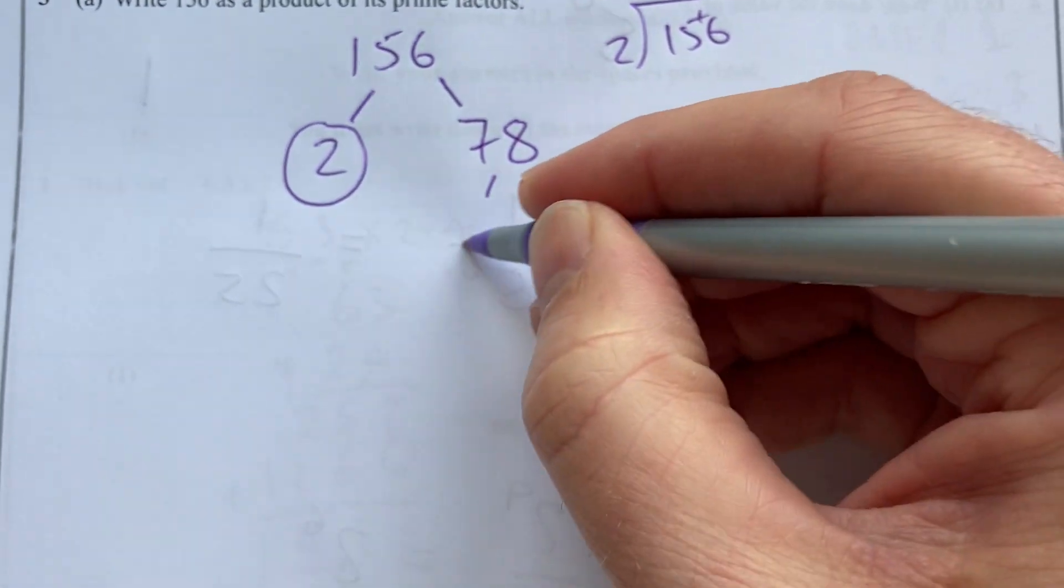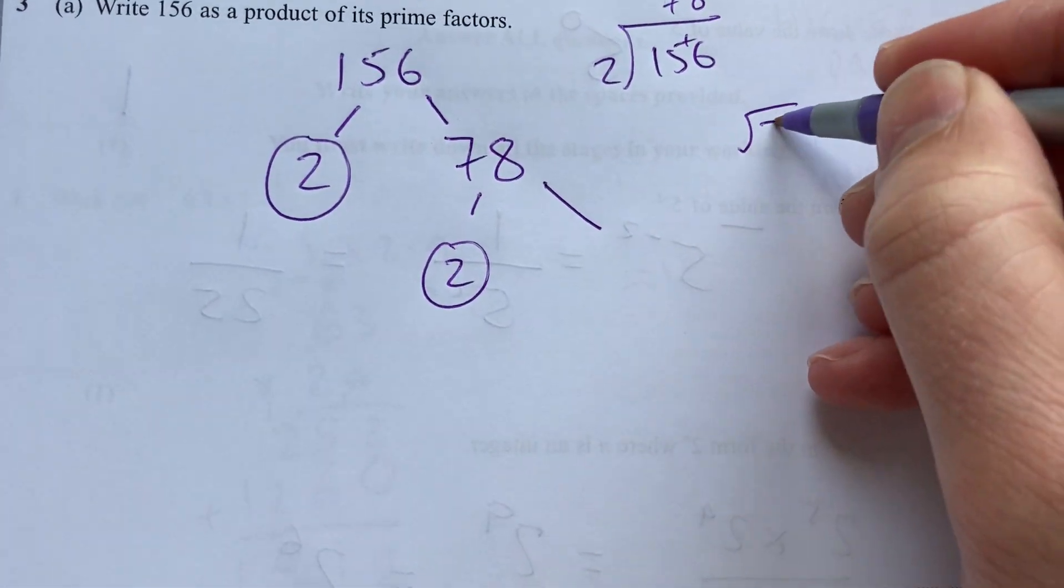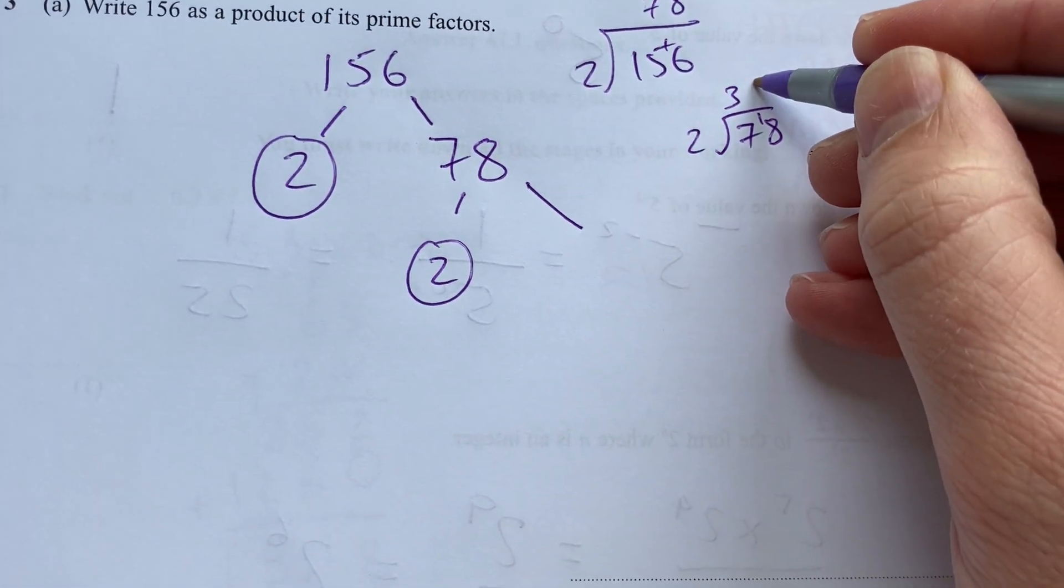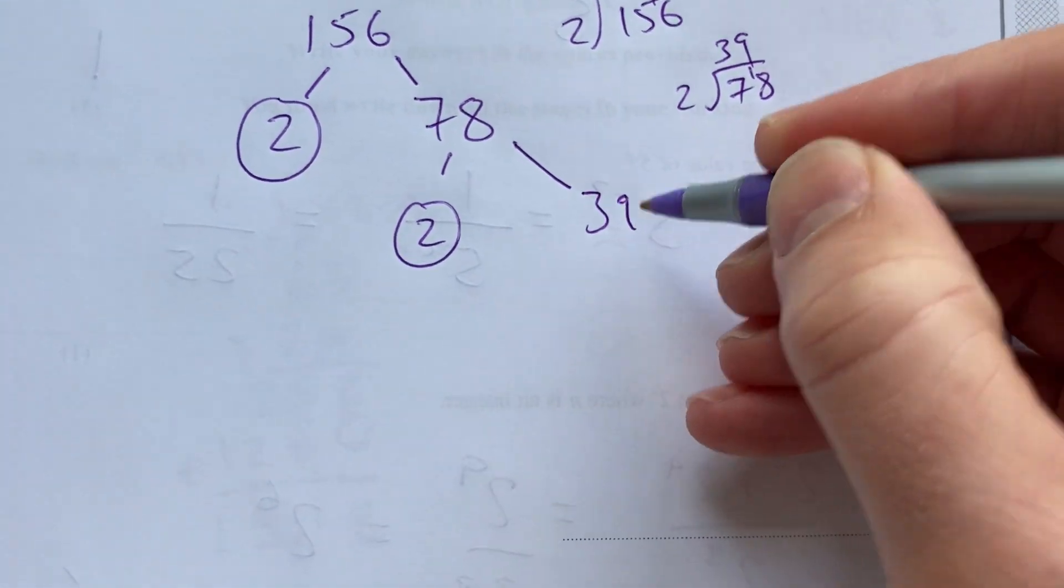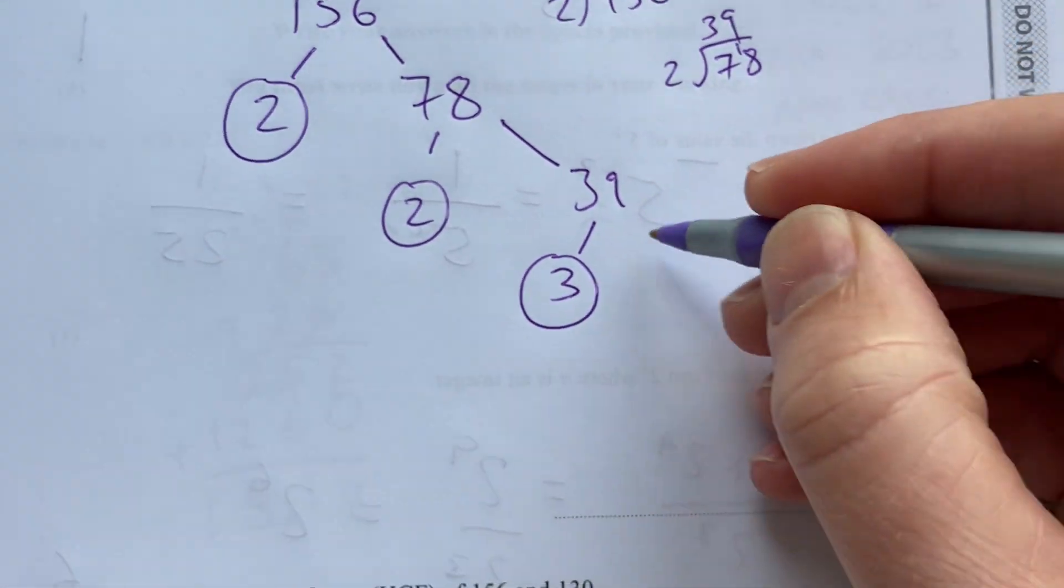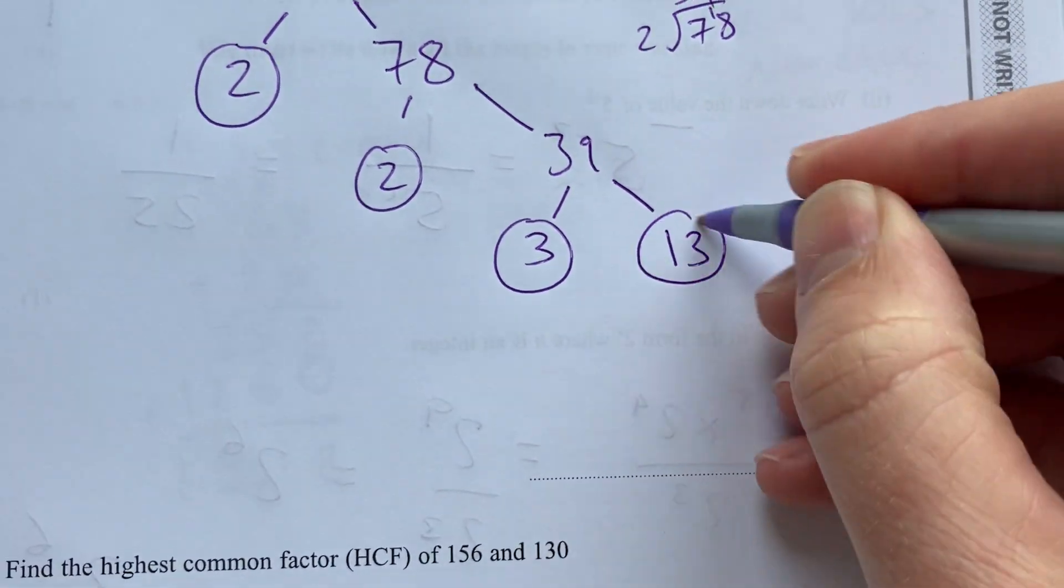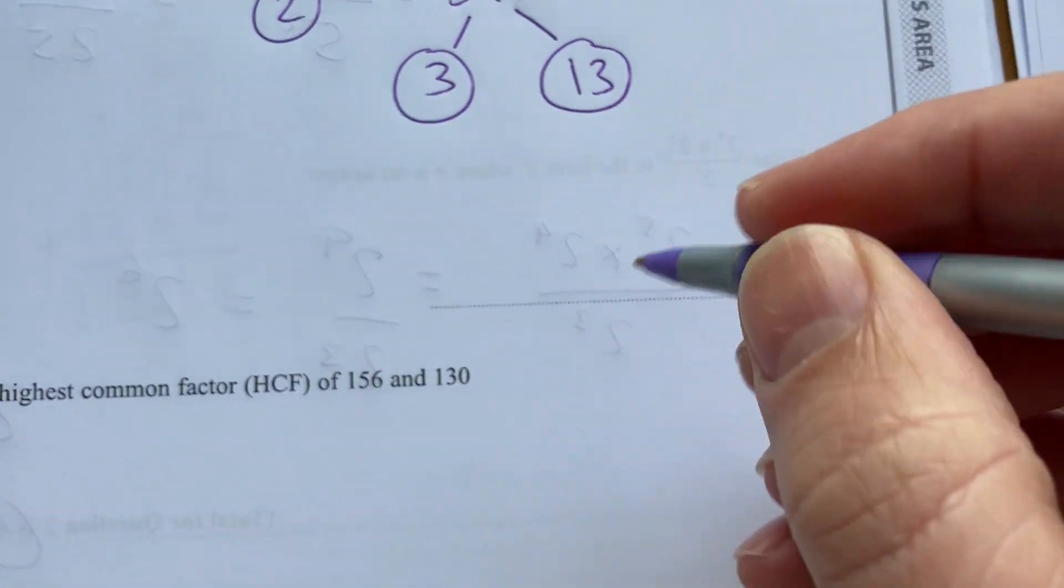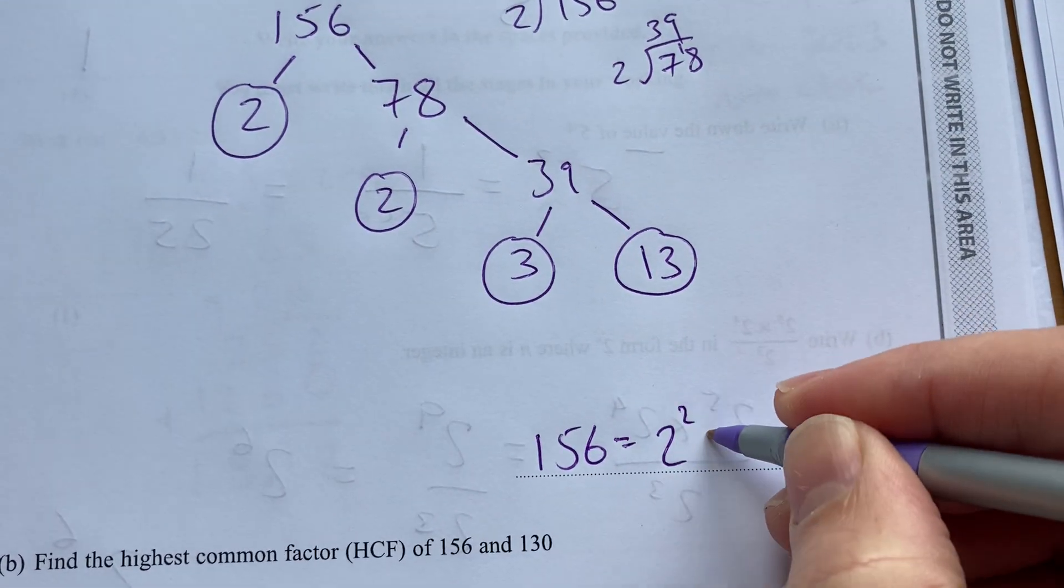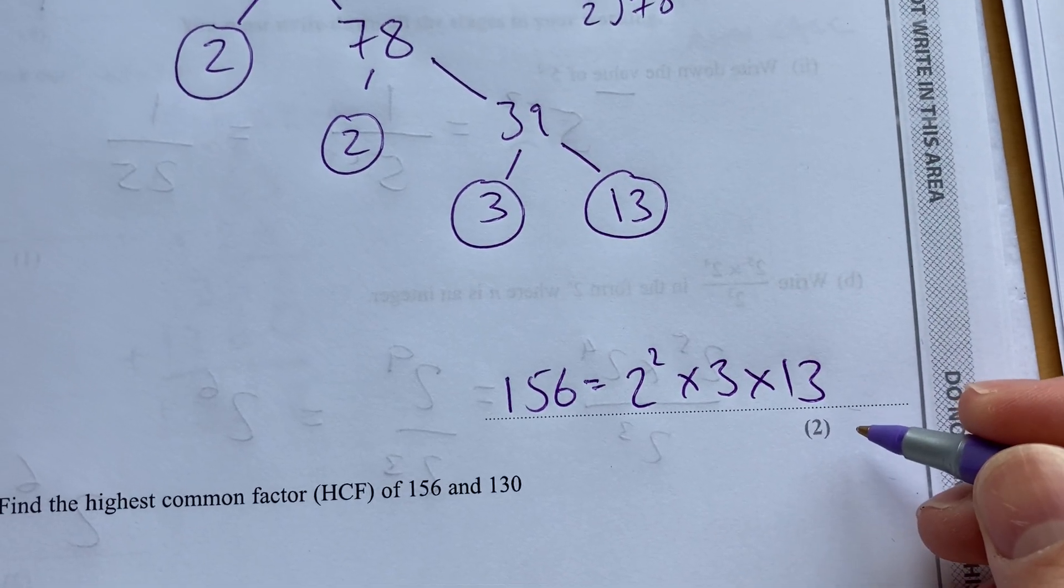Divide by 2 again. Circle that because it's prime. 78 divided by 2 is 39. Can't divide by 2 anymore, but it is divisible by 3. Circle that. 39 divided by 3 is 13. That's prime. So I circle it. So I can write 156 equal to 2 squared times 3 times 13. Worth 2 marks there.